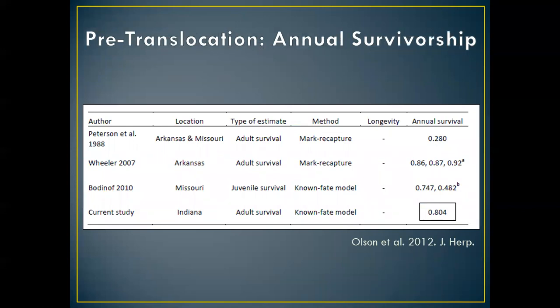The next thing we wanted to do was assess the survivorship of our population — if we just leave them alone, what can we expect their annual survival to be? We see for our adult Hellbenders that their average annual survivorship is about 80%. And remember, we've talked about survivorship curves and tables in our lectures, and you can see right where Hellbenders fit in those tables.